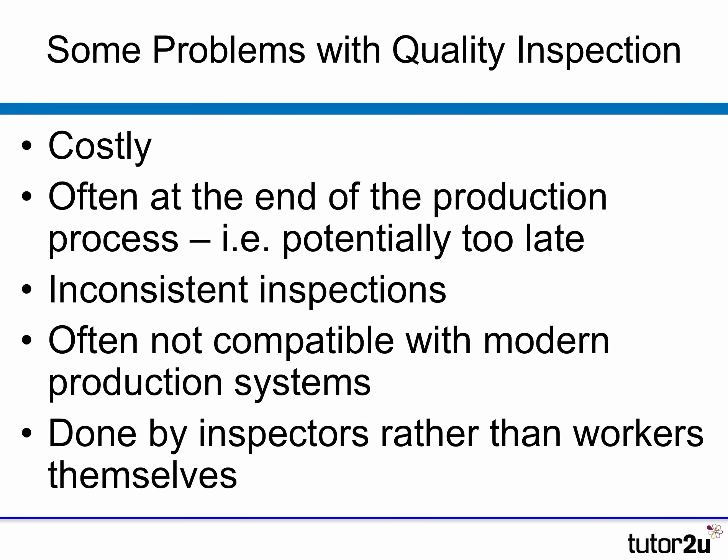However, there are some issues with quality inspection. It can be quite a costly process. If inspection takes place mainly at the end of the production process — just before the finished good is sent out — that's potentially too late, because you've already invested a lot of time and cost in getting the substandard product to that stage. There's also a risk that quality inspections are inconsistent, with one inspector's standards differing from another's. Additionally, inspection is usually done by inspectors rather than employees themselves, so there may be a lack of feedback from quality inspection and sampling back to the production teams on how they could improve.